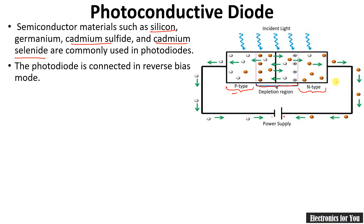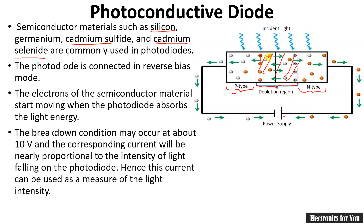This diode is connected in reverse bias — the p-junction is connected to the negative of the power supply and the n-junction is connected to the positive. Whenever light falls on it, due to the photons, electron-hole pairs are generated, the resistance of the depletion layer decreases, and current through the diode starts conducting. Breakdown may occur at about 10 volts, and the current will be nearly proportional to the intensity of light. A 10-volt power supply is enough, and as light intensity increases, the current increases.